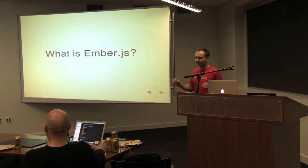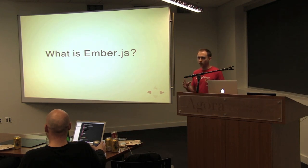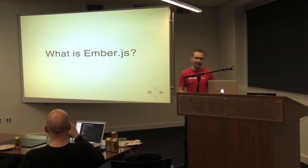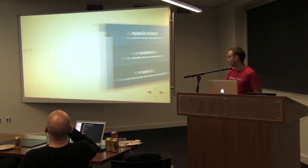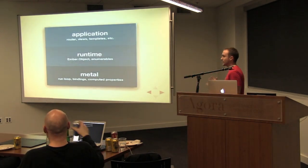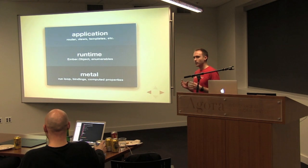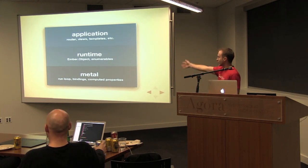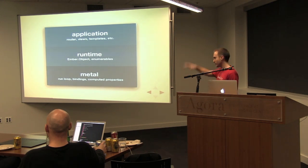I want to start with another question: what is Ember.js? Normally, when people think of Ember.js, they think of the application layer — they think of a router, they think of views, they think of Handlebars. But really, one of the cool things about Ember.js is it's actually pretty modular. It's really built from the bottom up. This is kind of a simplified representation of Ember.js's module structure.